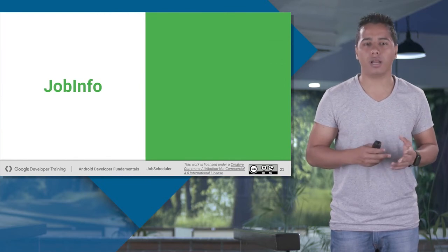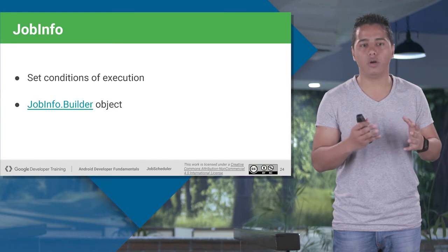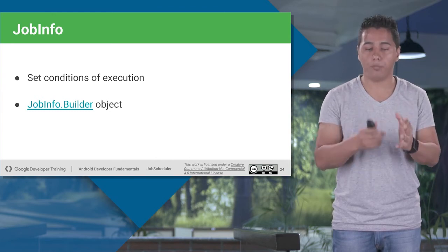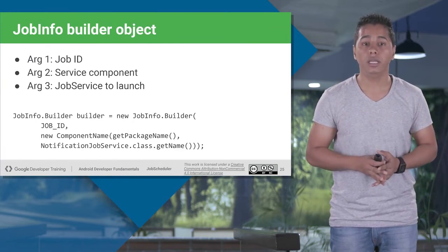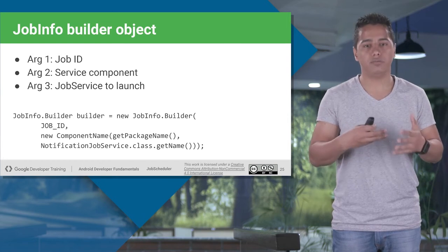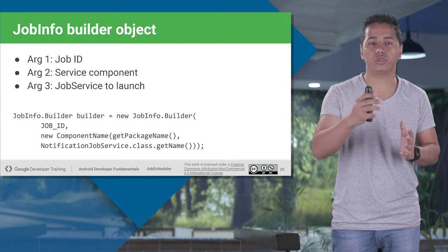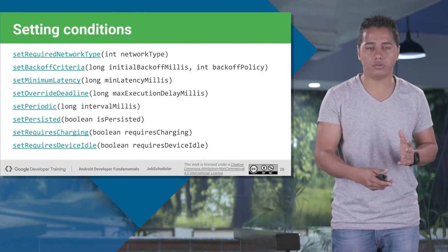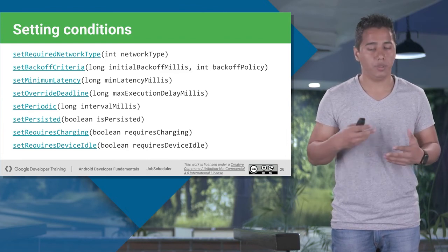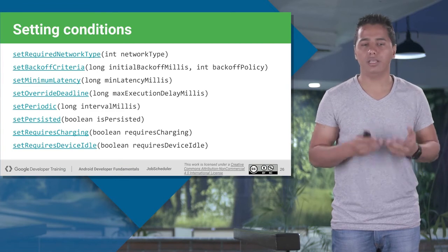Let's talk about the JobInfo class. It is a class where we use a JobInfo.Builder object that sets all the conditions for executing your job. To create the JobInfo.Builder object, you provide a JobId and a Service component — the name of your JobService class — so JobInfo knows which JobService to run. Then you set the conditions. You can set the required network type: unmetered, any network, or for Wi-Fi. You can also set device idle conditions.